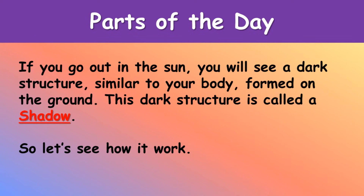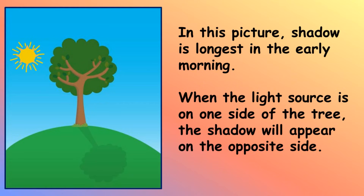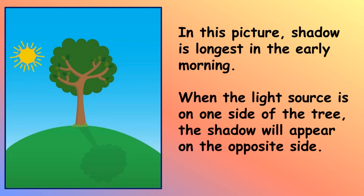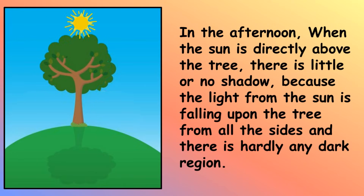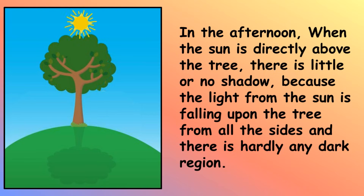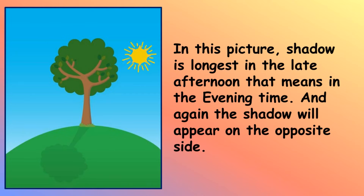If you go out in the sun, you will see a dark structure similar to your body formed on the ground. This dark structure is called a shadow. In this picture, a shadow is longest in the early morning. When the light source is on one side of the tree, the shadow will appear on the opposite side. In the afternoon, when the sun is directly above the tree, there is little or no shadow, because the light from the sun is falling upon the tree from all sides and there is hardly any dark region. Shadow is longest in the late afternoon — that means in the evening time — and again, the shadow will appear on the opposite side.